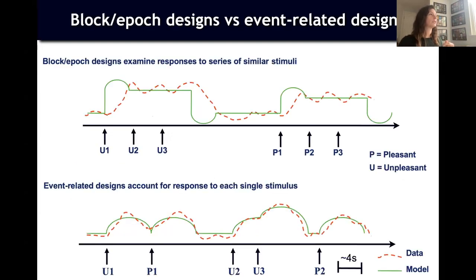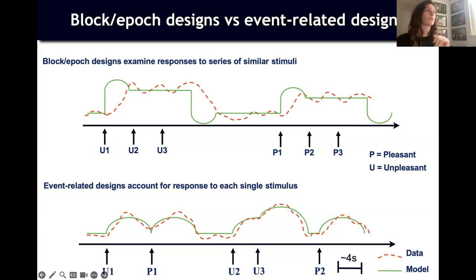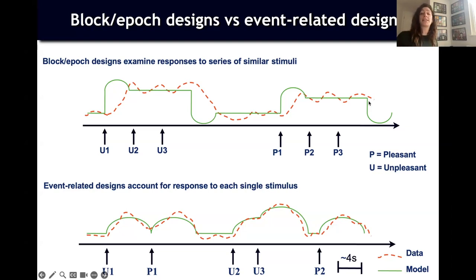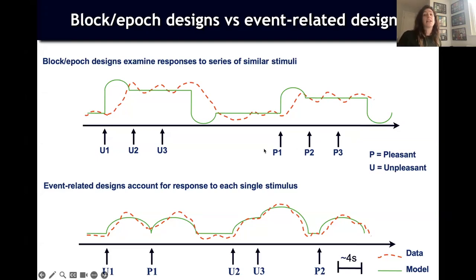Moving to our first section: what is a block design and what is an event-related design? Here you have two examples where the red dashed line represents the BOLD signal you collect and the green line represents the model of what you think is happening in the brain. BOLD signals are delayed by a few seconds, so the signal from a stimulus doesn't happen straight away — it's delayed, goes up and down, decays, and has temporal characteristics.